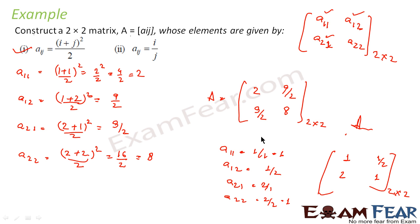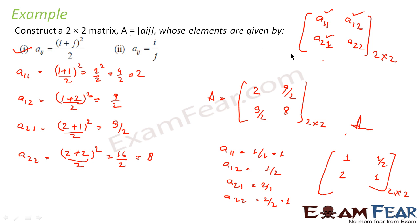For any example, first write the matrix in general representation form. In case of a 3×3 matrix, you write a11, a12, a13, a21, a22, a23, a31, a32, a33. Depending on the matrix order, first write the general form, find all elements by putting i and j values, then replace them to get the final matrix.